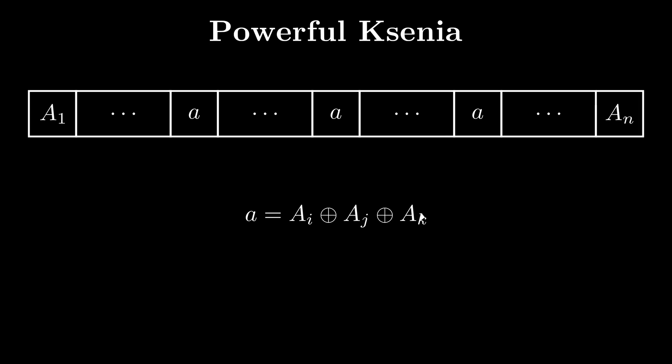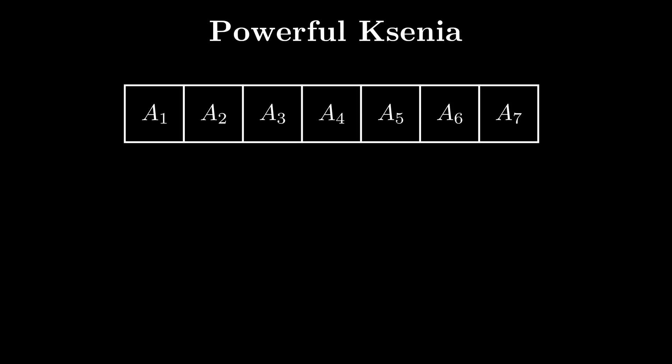Let's separate this out into two cases: when n is odd and n is even. When n is odd, we can come up with a strategy to make all elements of the array equal to the XOR of all elements of the initial array in n-2 operations.